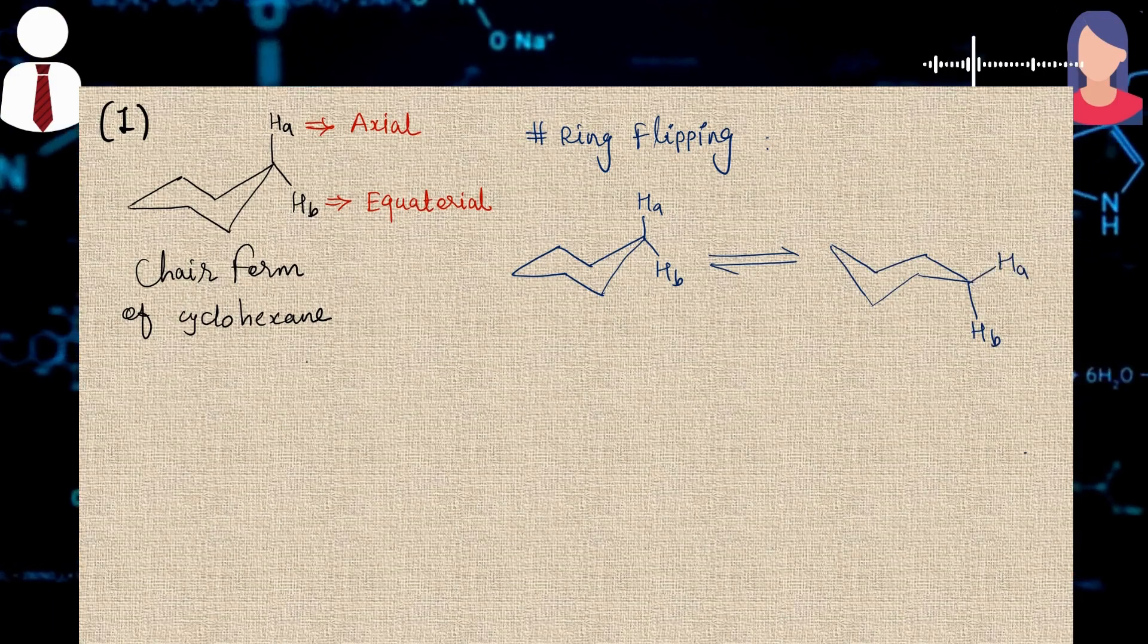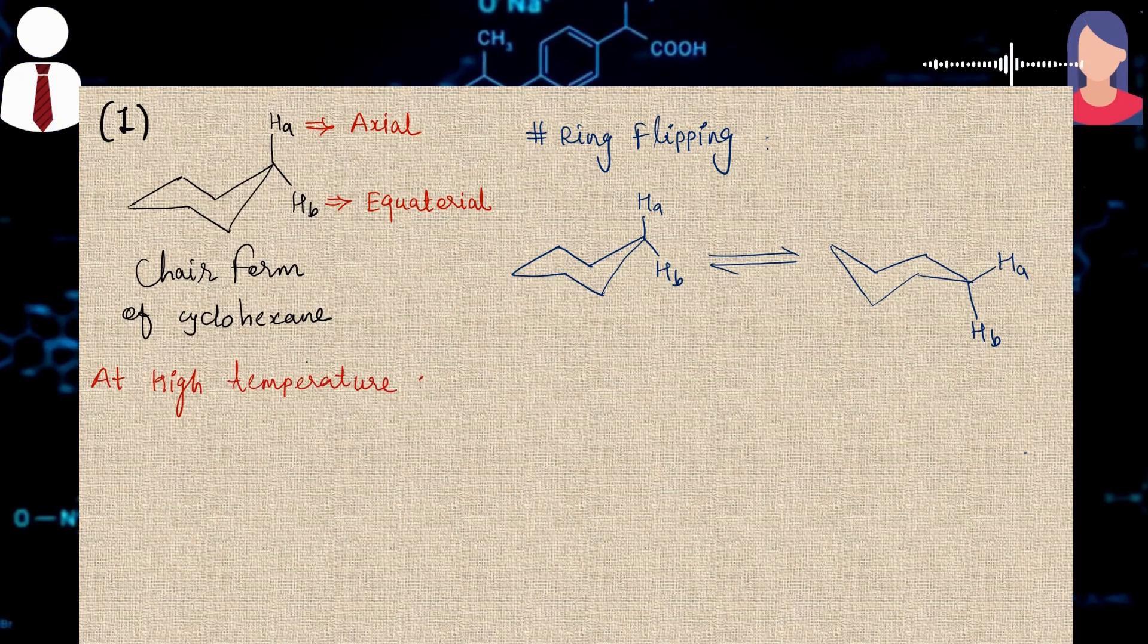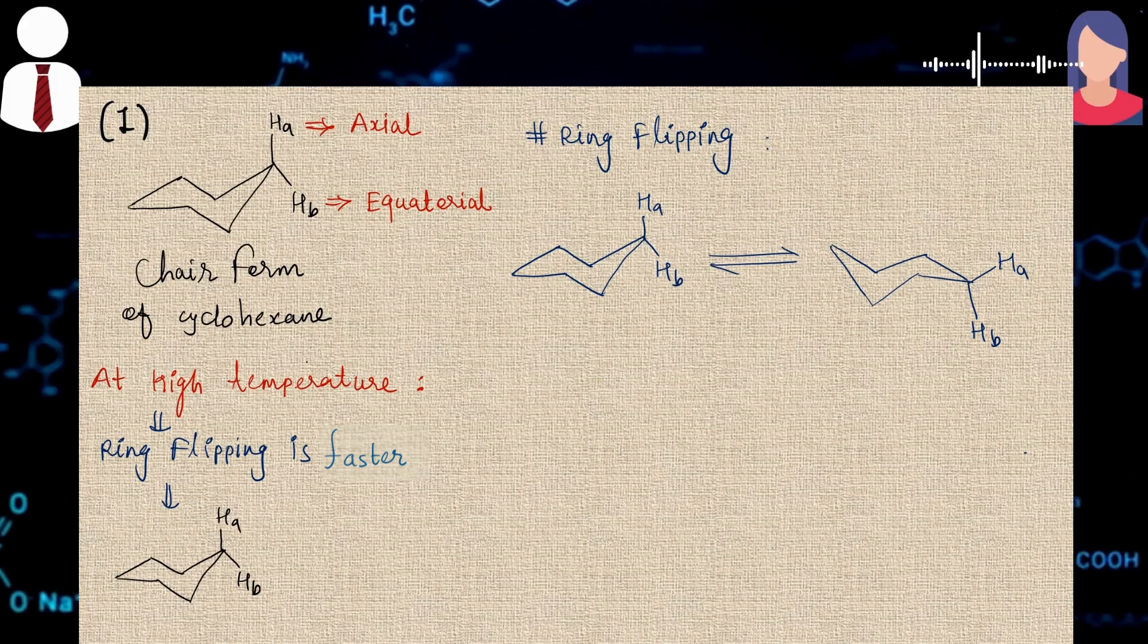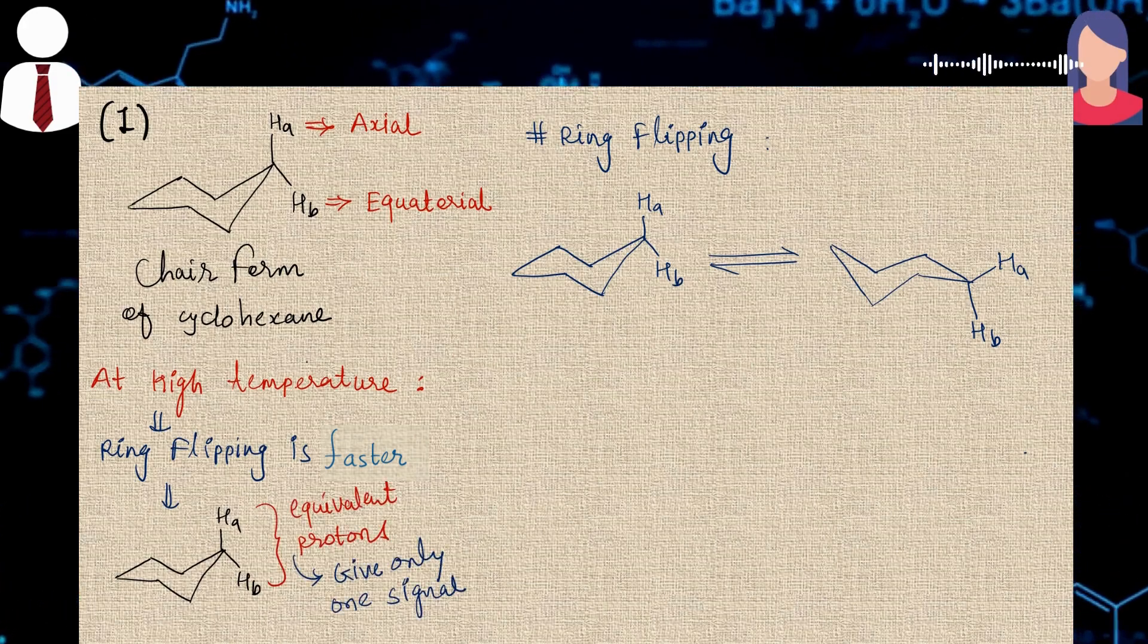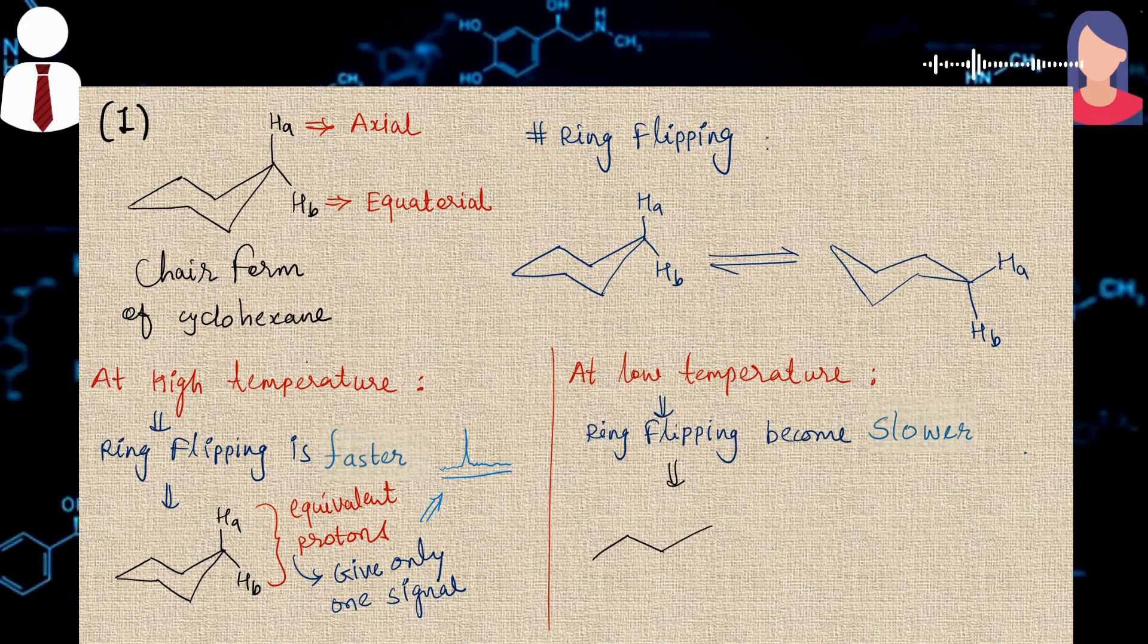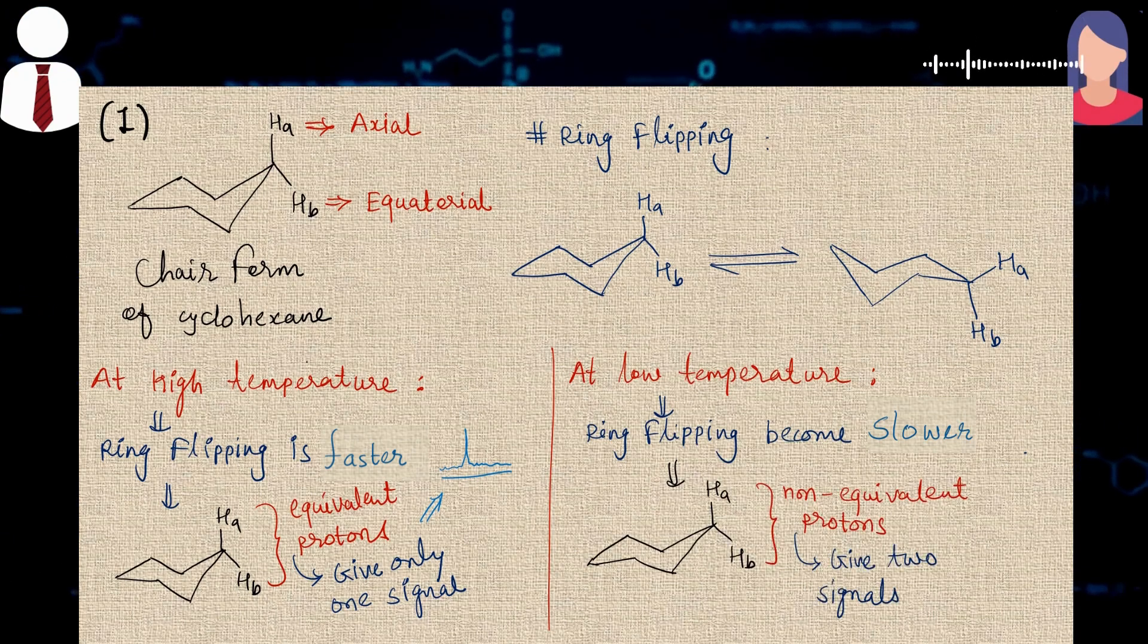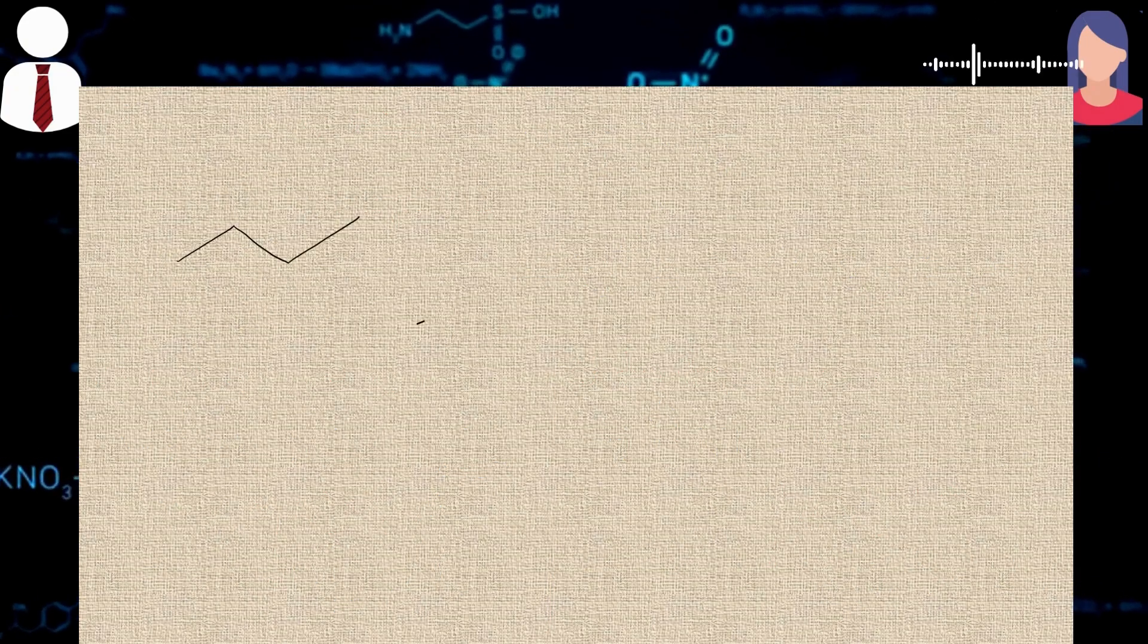Now this ring flipping of cyclohexane is too fast. So when we observe its NMR spectra at high temperature or room temperature, then the instrument is unable to detect these two different types of protons due to continuously ring flipping and equilibrium. So it detects only one type of proton in the whole ring, and therefore only one signal is observed at high temperature. But when we lower the temperature, then this ring flipping process becomes slower. So when we take its NMR spectra, then the instrument is able to detect these two different types of protons. This is also called dynamic NMR spectroscopy. And in the NMR spectra two different types of signals are observed.